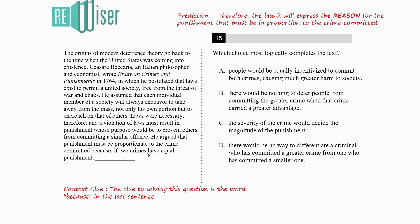Option A says people would be equally incentivized to commit both crimes, causing greater harm to society. This is incorrect — rather than committing both crimes equally, people would want to commit the crime that gives them the most advantage. So Option A can be eliminated; it does not give us the proper reason for why equal punishment is problematic.